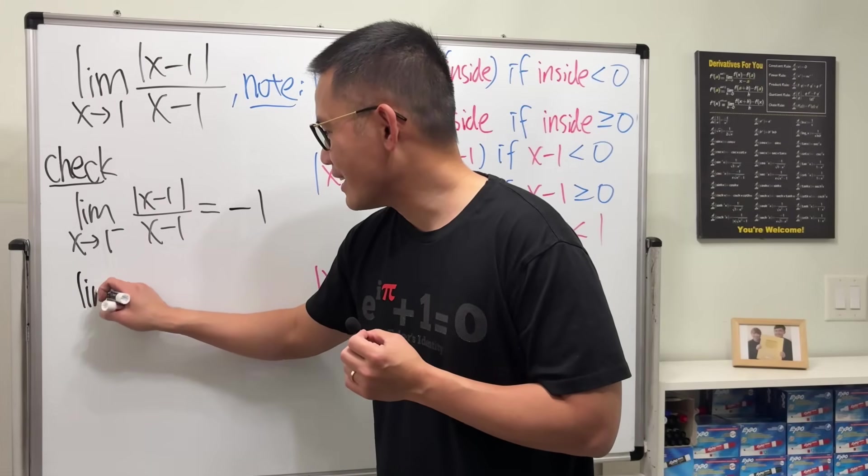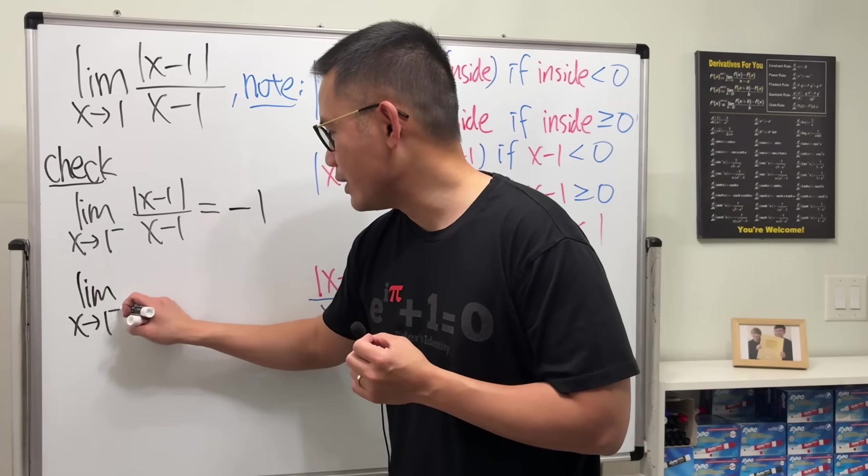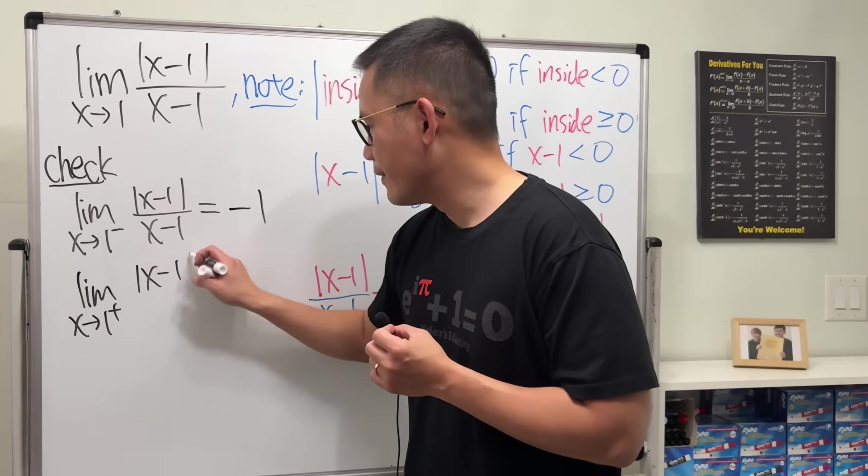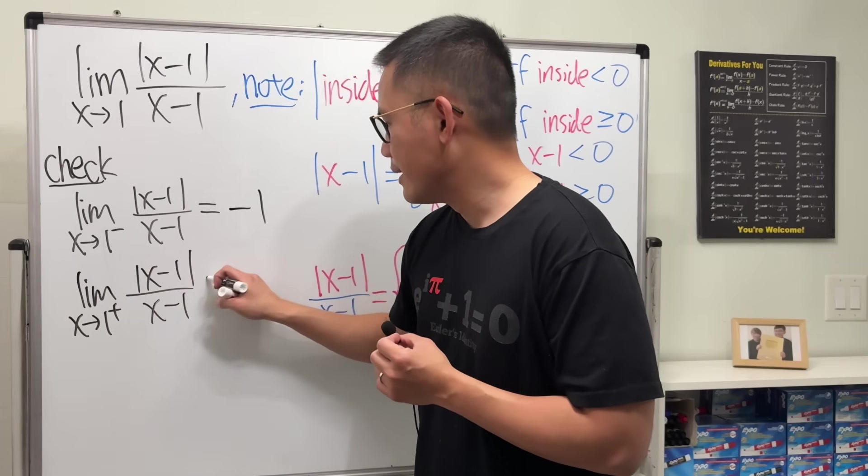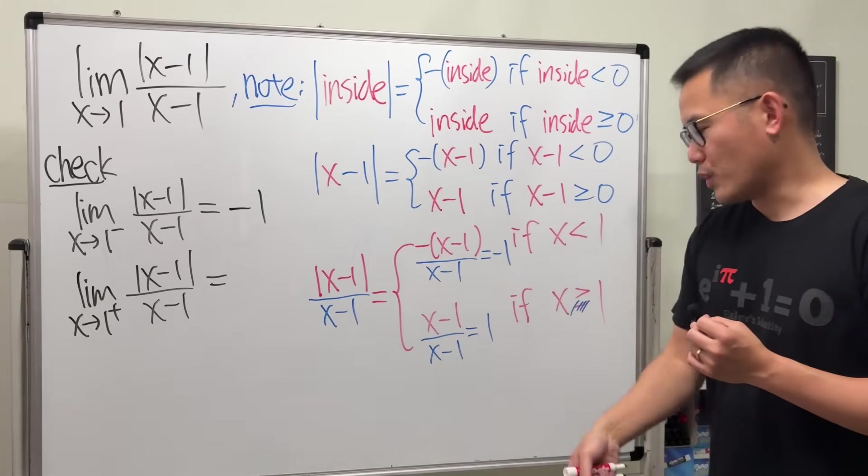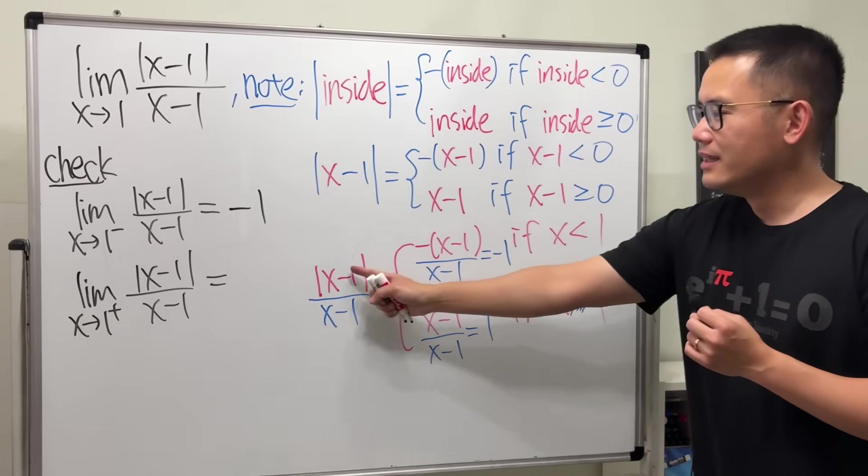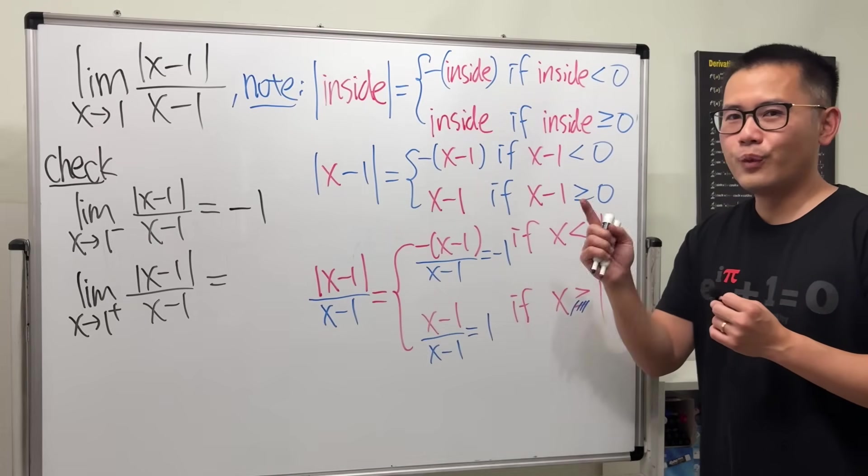And then, if you have the limit as x approaching 1 from the right-hand side, so now x is bigger than 1, which is the second piece, this function will actually just give you 1.